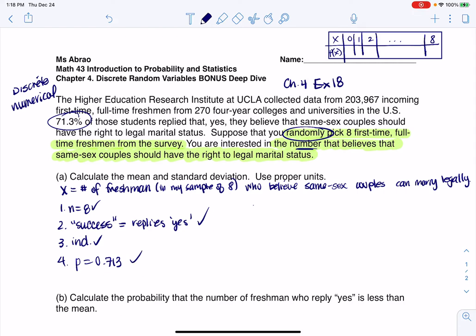So with this, since I can check all of these off, I can say X is distributed binomially. We've got an 8 here and a 0.713 for the probability of success. Now, all of this is working up to, how do you get the mean and standard deviation?